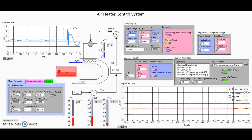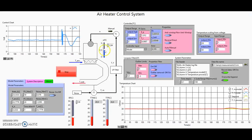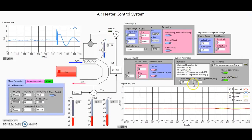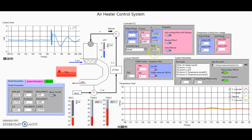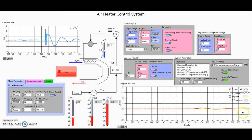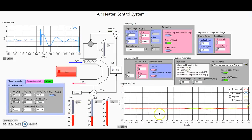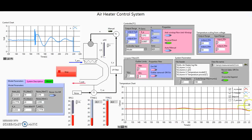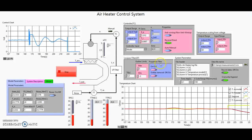You can also change the action of the controller between reverse and direct. This system is a reverse-acting system: if you increase the control signal, temperature will increase. For example, in a direct-acting system, instead of controlling a heating element you could control a fan — the more control signal, the faster the fan and the cooler the system. We now set the set point further and you can see it decreases instead of trying to control against the set point. If this had been a direct-acting system it would now be trying to reach the set point instead of going away from it.